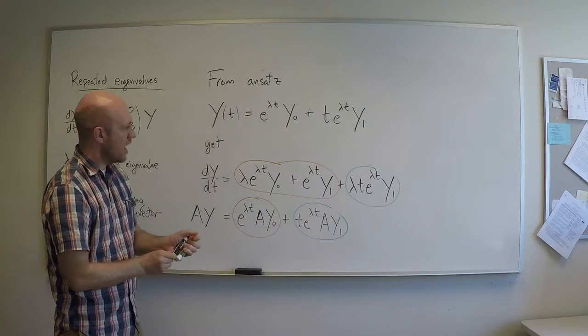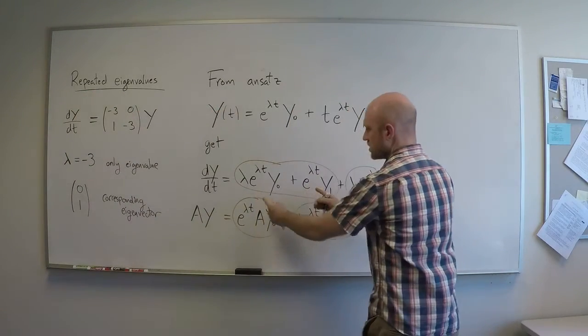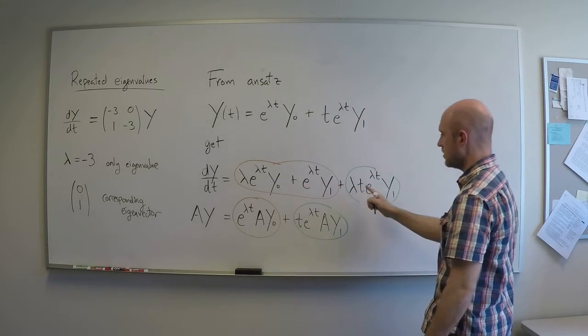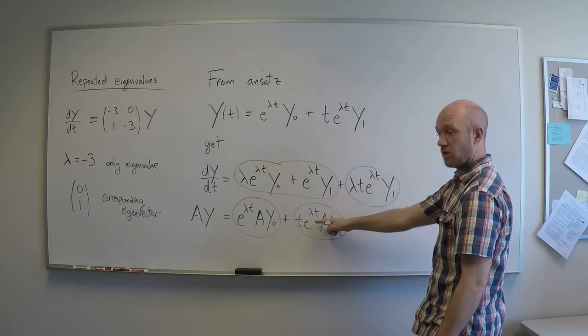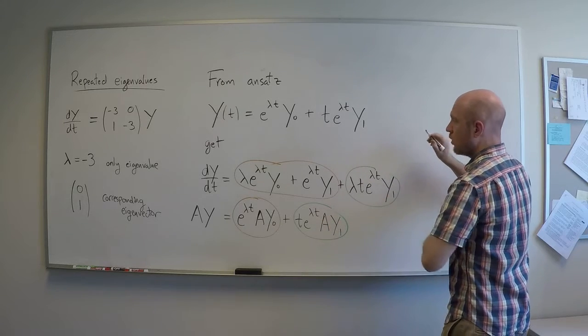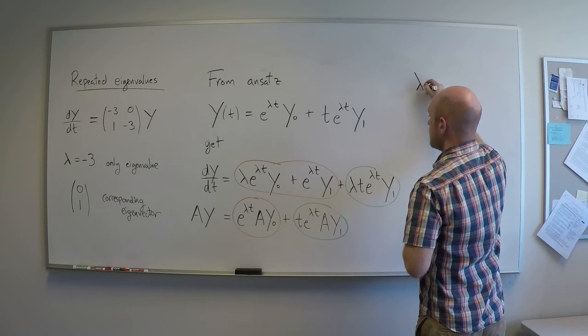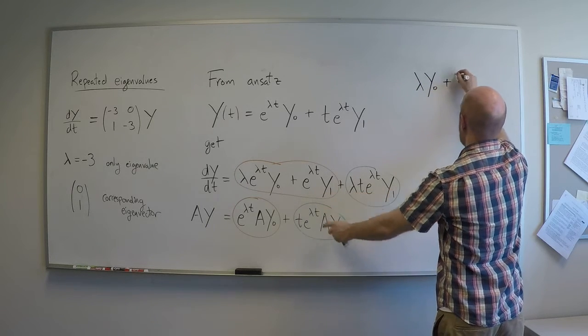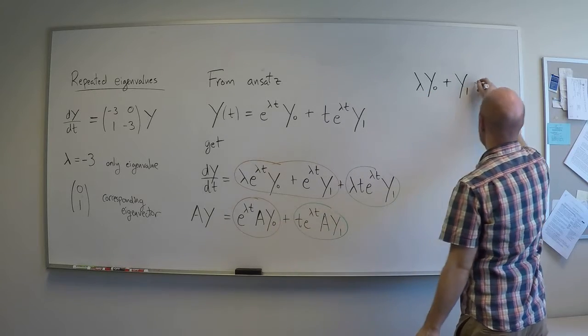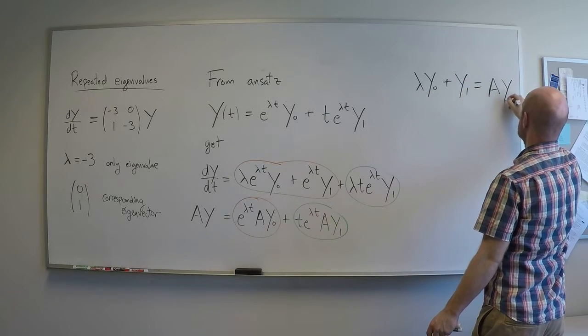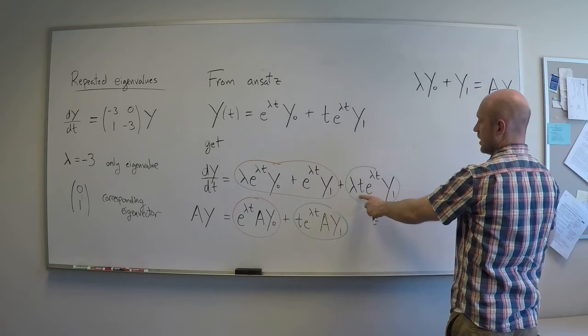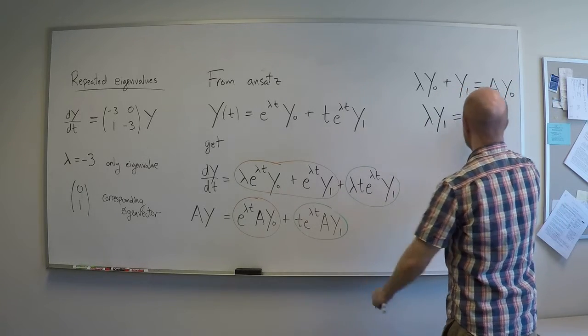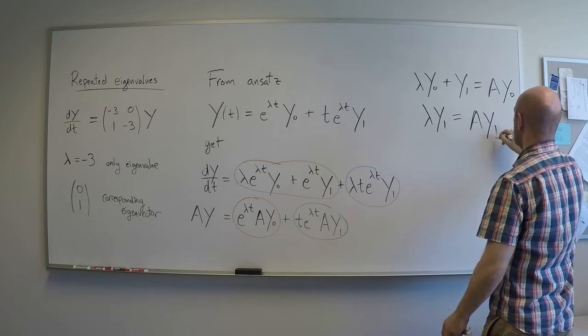So as a consequence, I can find that the coefficients of these functions, the coefficients of the two functions in orange, e^(λt) is here, and t*e^(λt) is here in green. Those two coefficients must be equal. So the conclusion is λy0 + y1 must equal Ay0. Similarly, λy1 must equal Ay1.